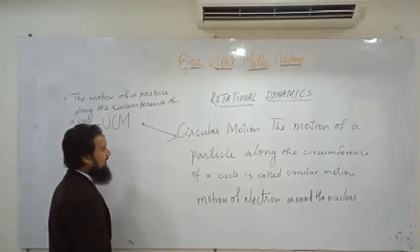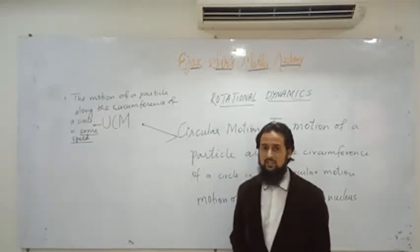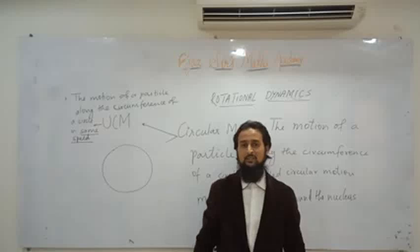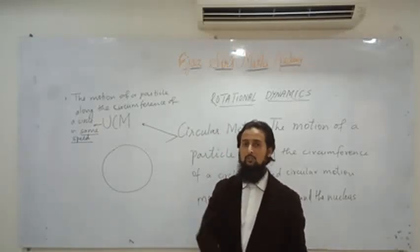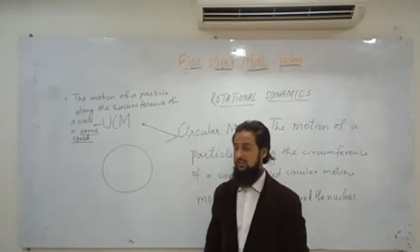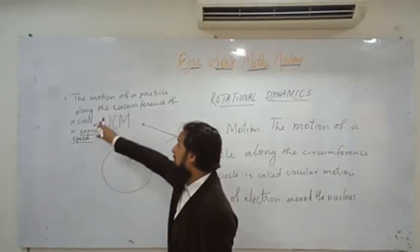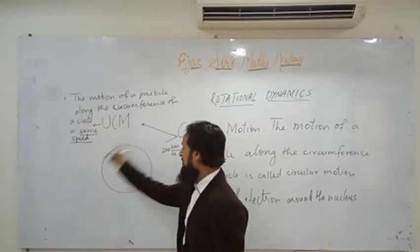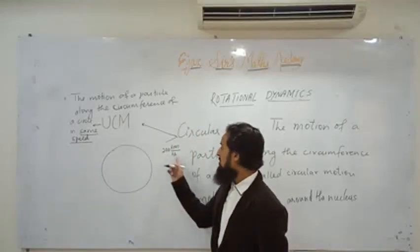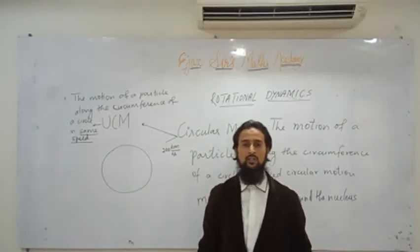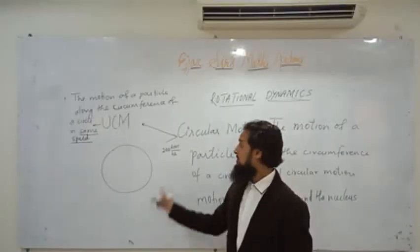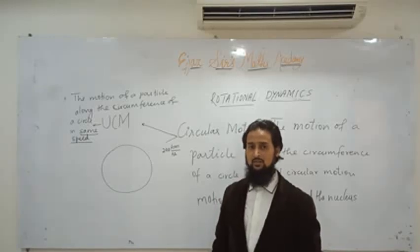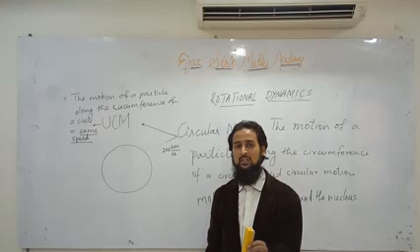A question I asked in 11th standard: if a particle is performing uniform circular motion, will it have acceleration or not? Suppose speed is 200 km/hr at every point of the circle — speed is not changing. So will there be acceleration? Yes — uniform circular motion is accelerated motion.